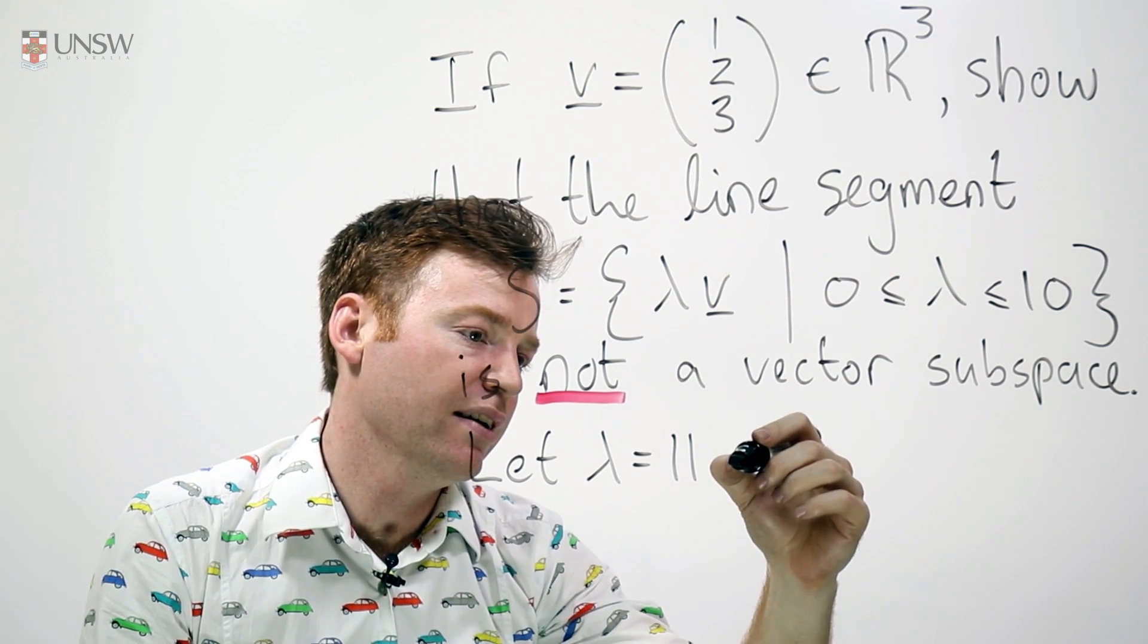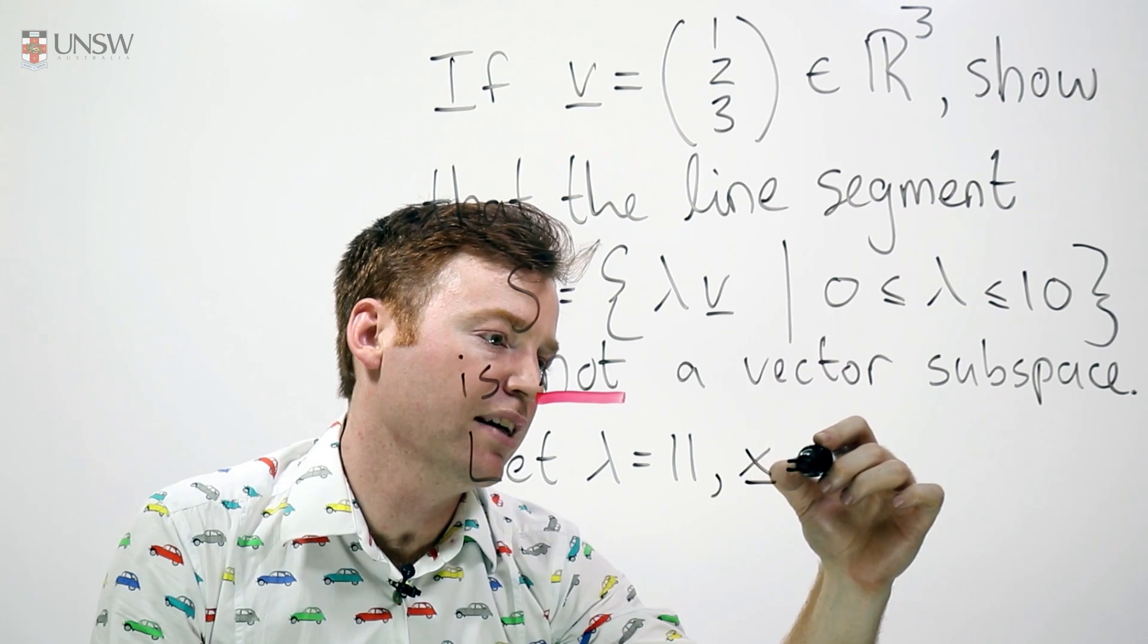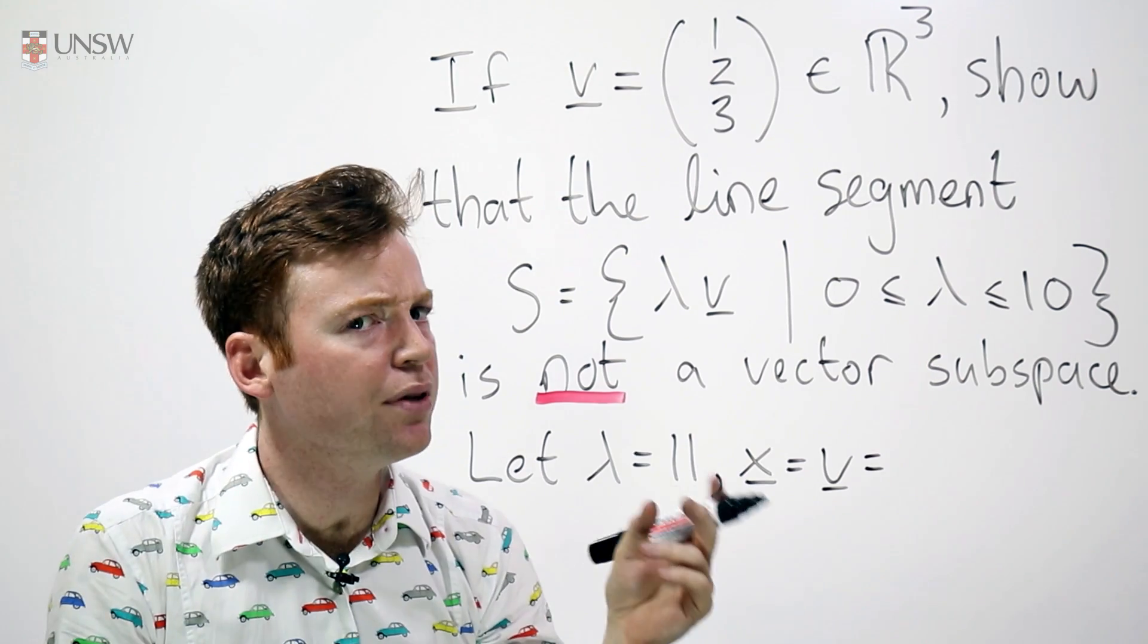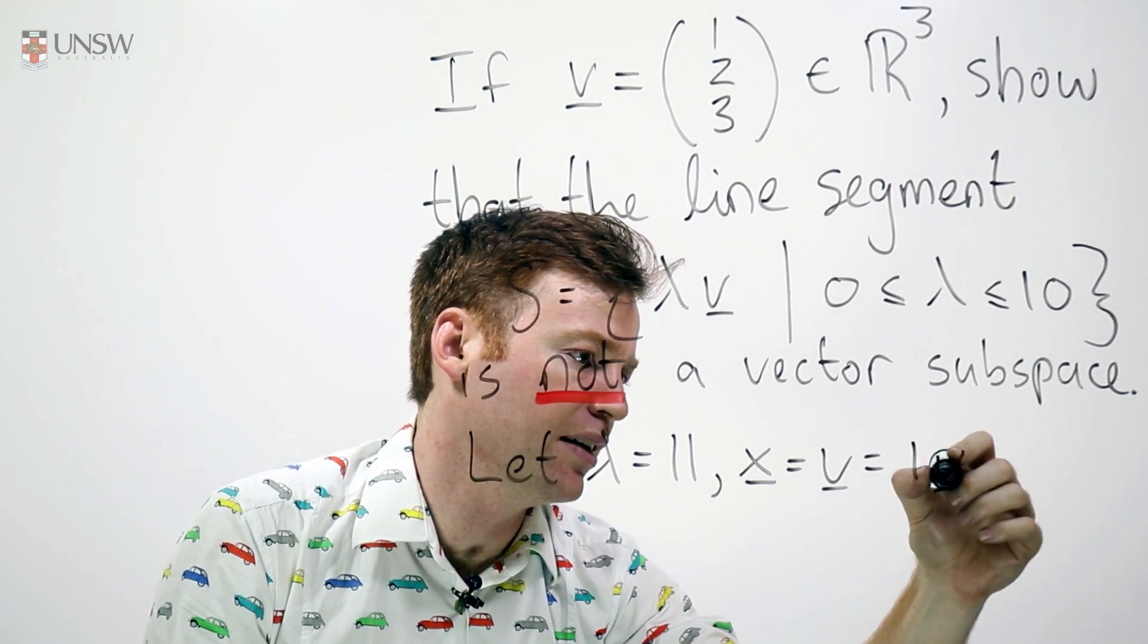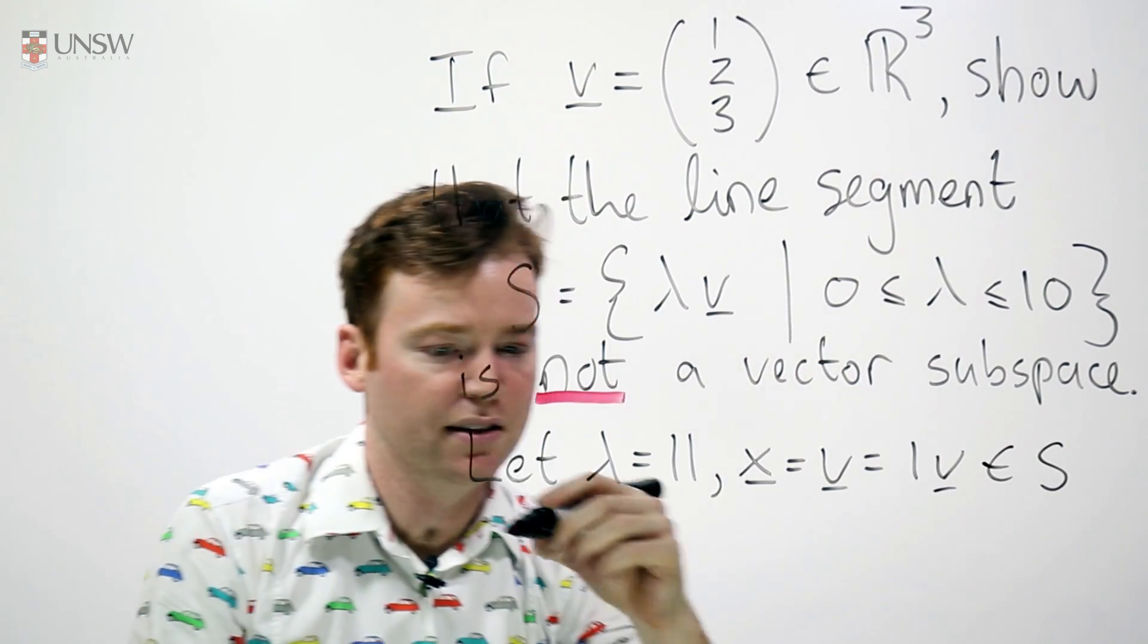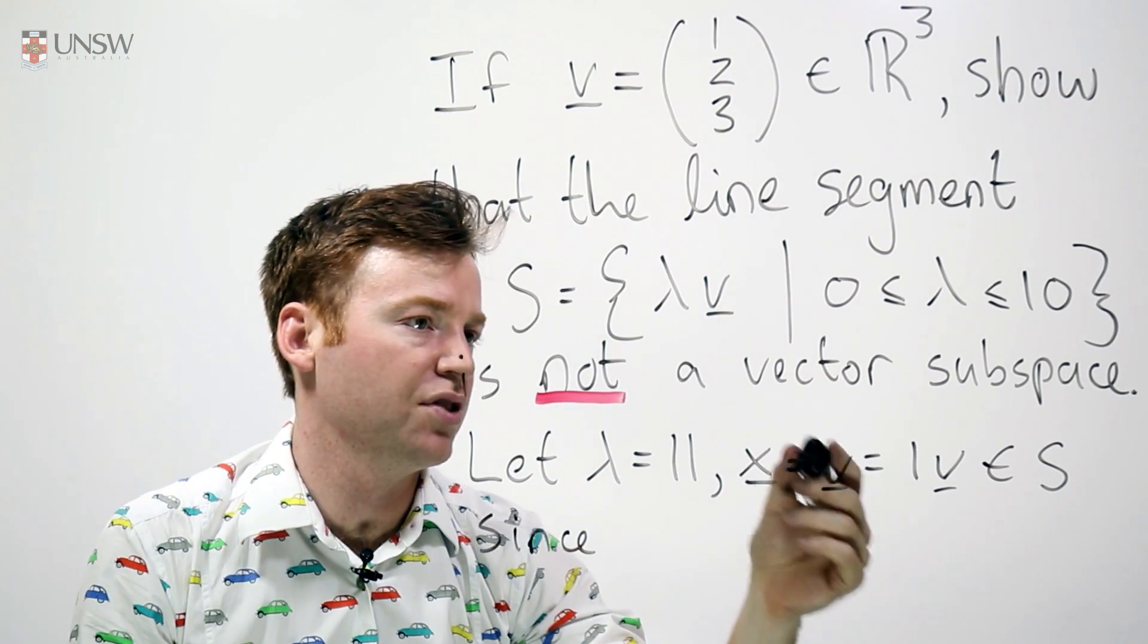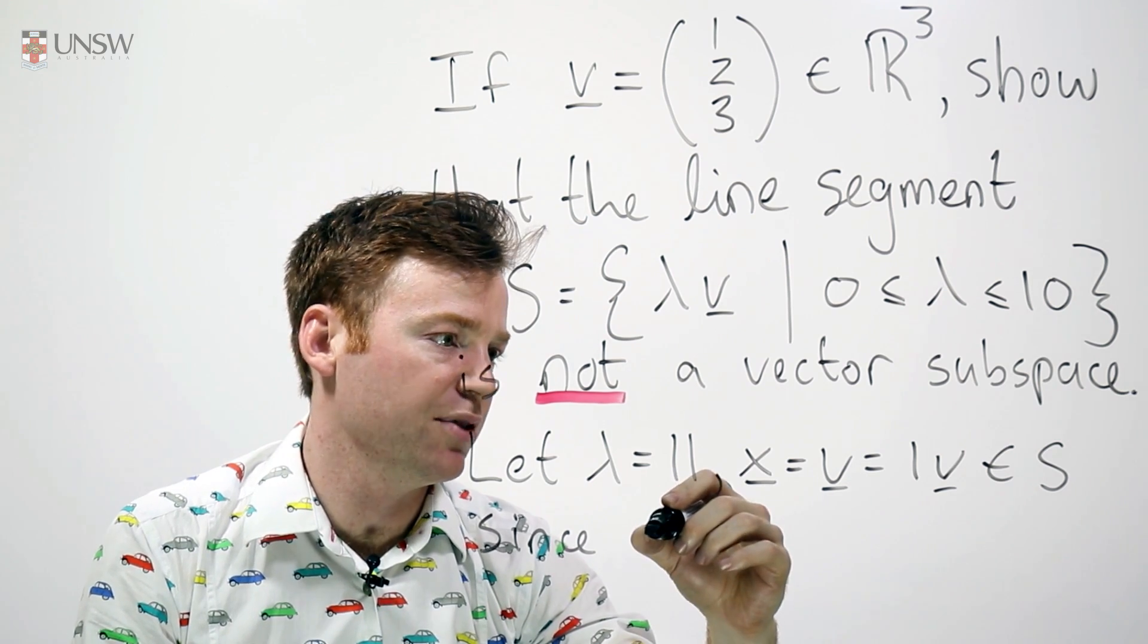And I'm going to let X be a vector and it's just going to be V, which in particular, I need to show that this is in the set. So, I'll say that's equal to 1V, which is in S, since X is just equal to lambda V, where the lambda in this case is just 1.